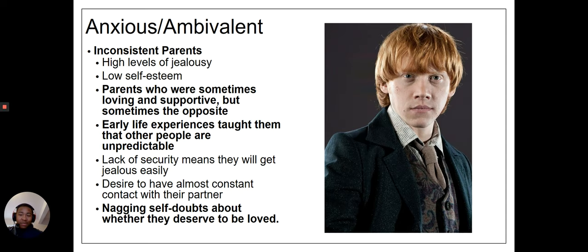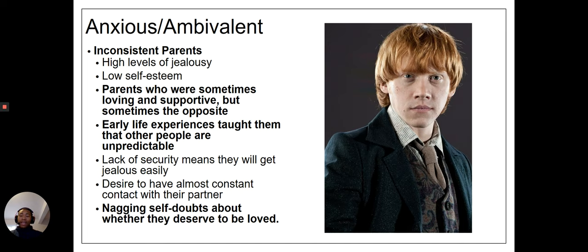Then we have anxious and ambivalent, and Ron Weasley is going to be my example. Some of the hallmarks are inconsistent parents — parents who are sometimes loving and supportive, but also sometimes the opposite. They had early life experiences that taught them that other people are unpredictable, which is where the anxiety comes from, and then nagging self-doubts about whether they deserve to be loved. Ron's parents were very loving, but could at times be screaming at them through magical mediums, or being extremely distracted and sometimes absent. We also see this style in his love for Hermione and his doubt that she'll love him back — a feeling of nervousness about whether he even deserves the love he's giving her.